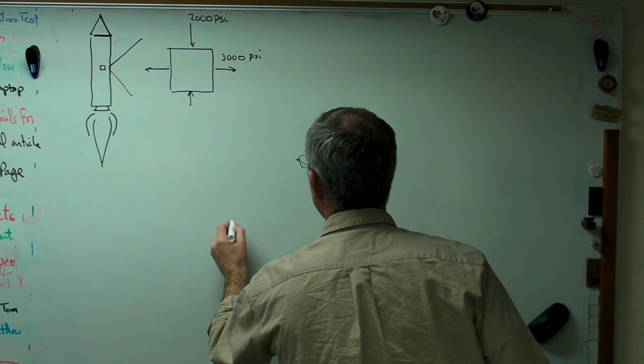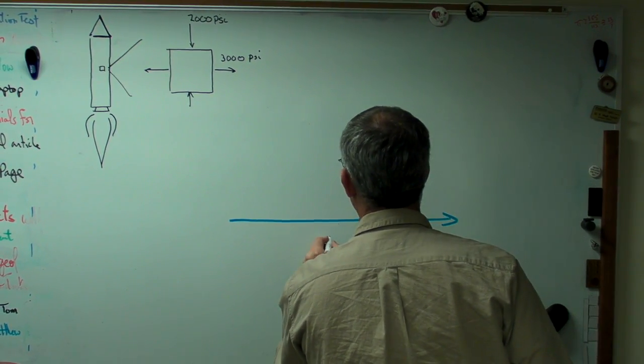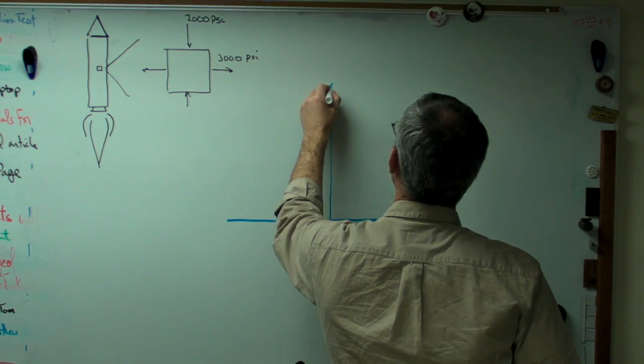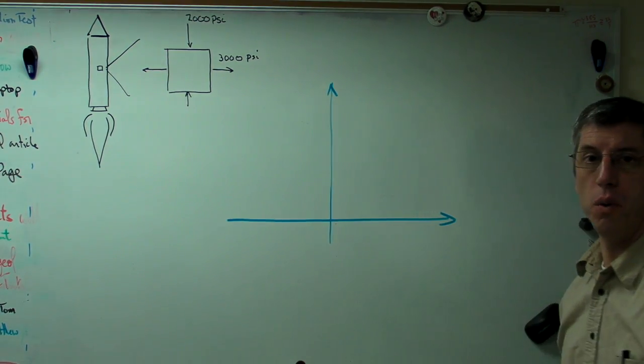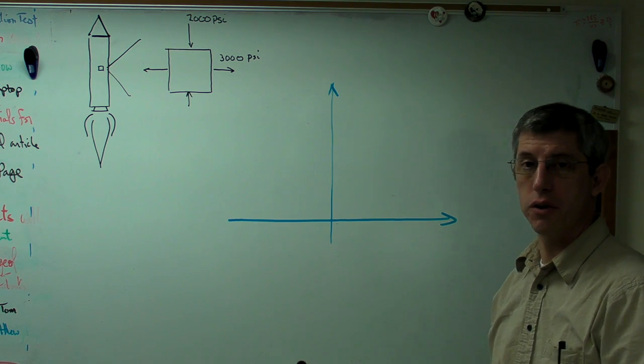Mohr's Circle is drawn on what at first seems like kind of an unusual axis. We're used to these being x and y dimensional axes. These aren't dimensional axes now. These are stress axes.